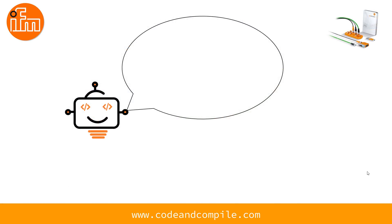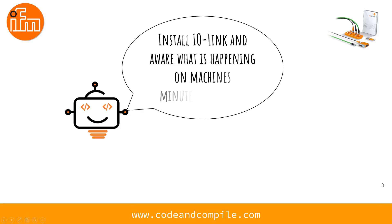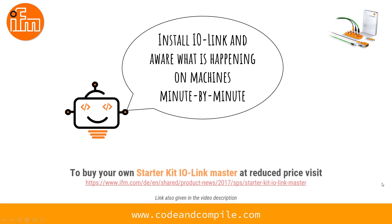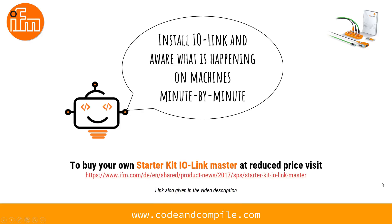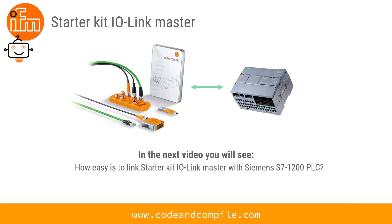If you have a similar application, don't wait — install IO-Link to get information from your machine minute by minute. You can also buy the Starter Kit IO-Link Master at a reduced price from the link given in the description. In the next video, we will see how easy it is to link the Starter Kit IO-Link Master with a Siemens S7-1200. Thank you for joining, and I hope to see you in the next video.